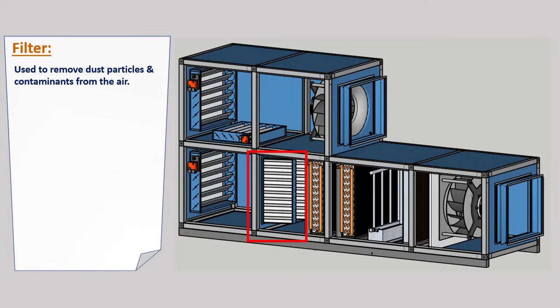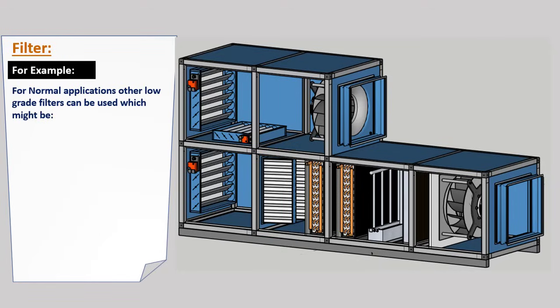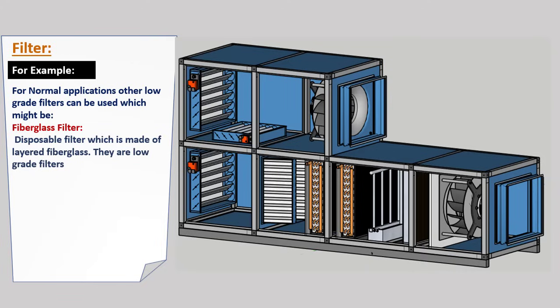After the dampers, we have filters. These are used to remove dust particles and contaminants from the air. Different types of filters are used depending on the application. For clean rooms and hospital operation rooms, HEPA filters are used — they are highly efficient and remove about 99.97% of particles of 0.3 micron size or larger.